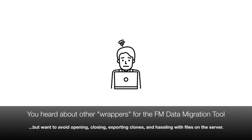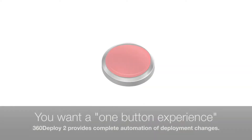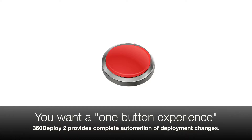You've heard about a few other wrappers for the FileMaker data migration tool, but you want to avoid opening, closing, exporting clones, and hassling with files on the server. You want a one-button experience that gives you the freedom to meet with clients, take a break, or get other work done, and then come back to a completed process that deployed changes and updated the production file for you.